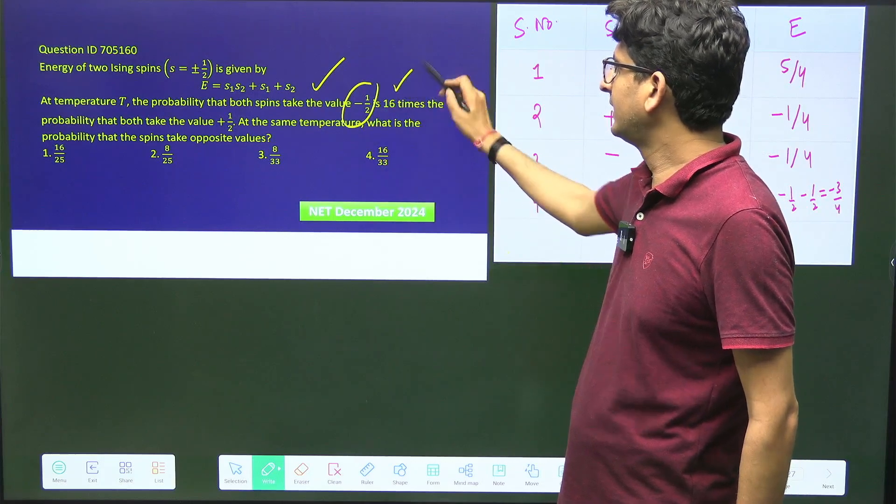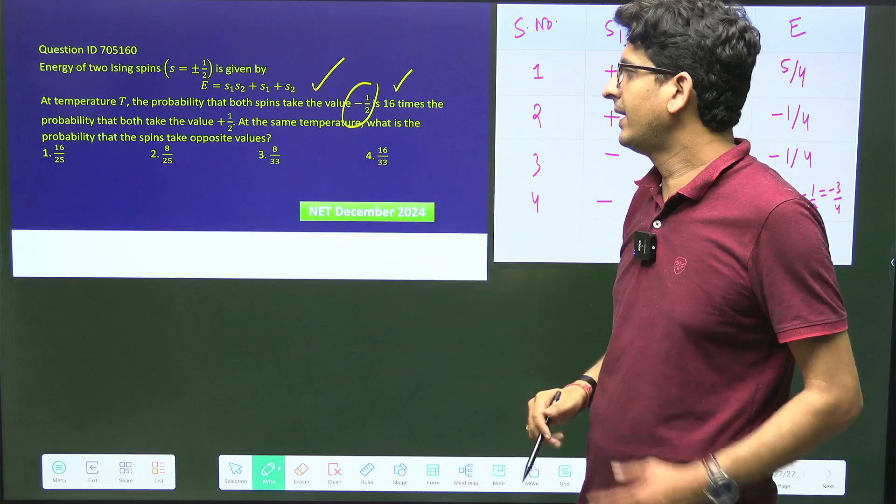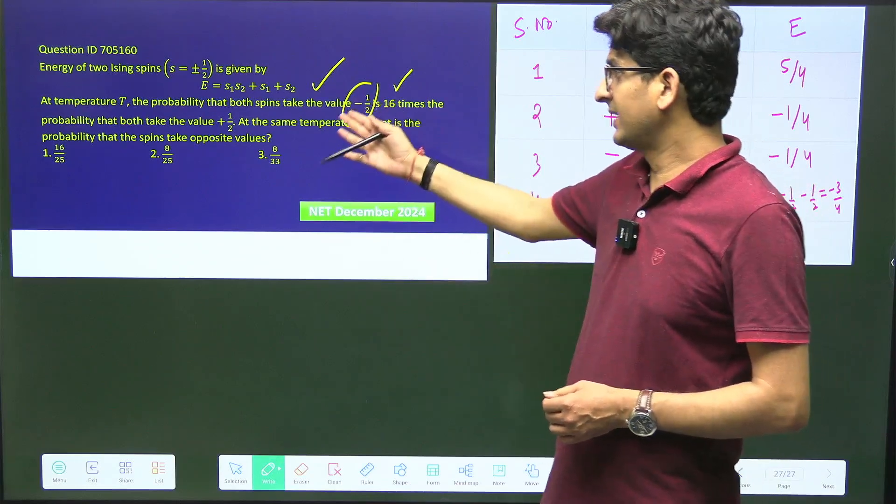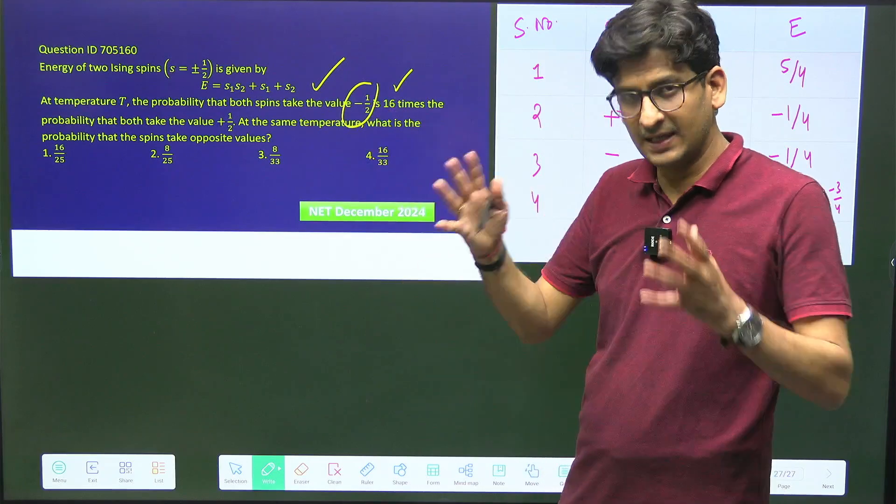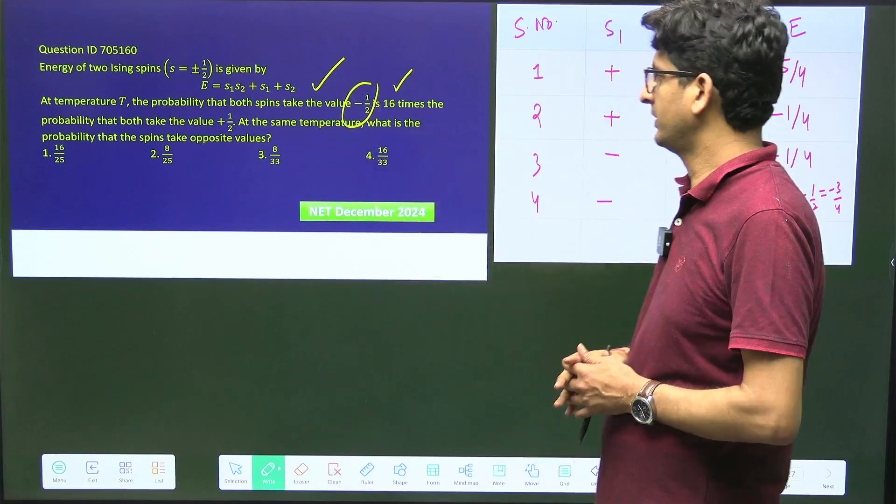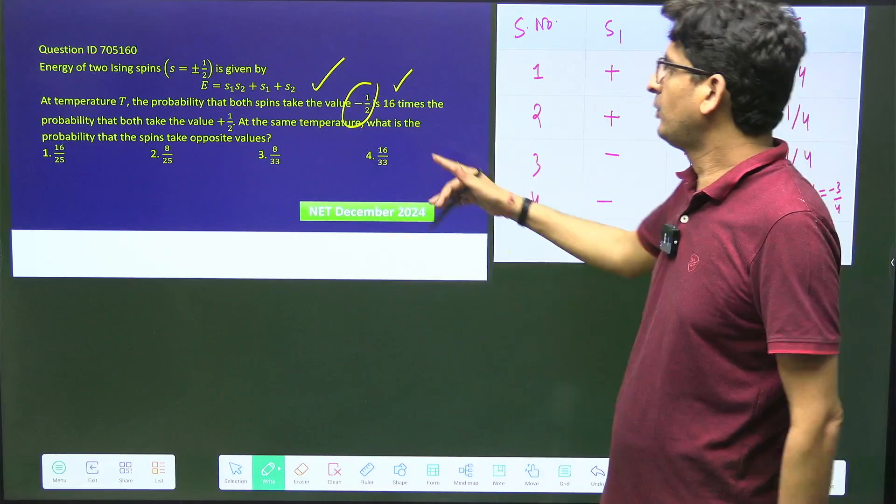Hello students, I am going to discuss one question from NET December 2024 based on statistical mechanics. It's given that energy of two Ising spins is like this - they have given the profile and are saying that...